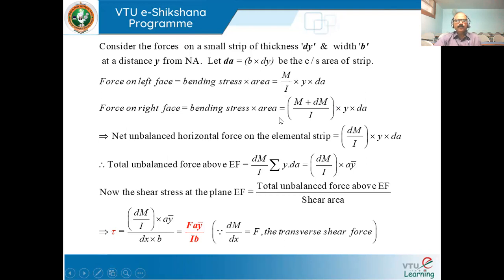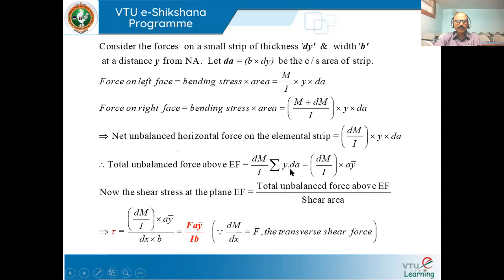The net unbalanced horizontal force on the elemental strip — which causes shear — is the difference of the right and left face forces: dM/I · Y · dA. To extend this to the total unbalanced force above plane EF, we integrate: total unbalanced force = dM/I · ΣY·dA.